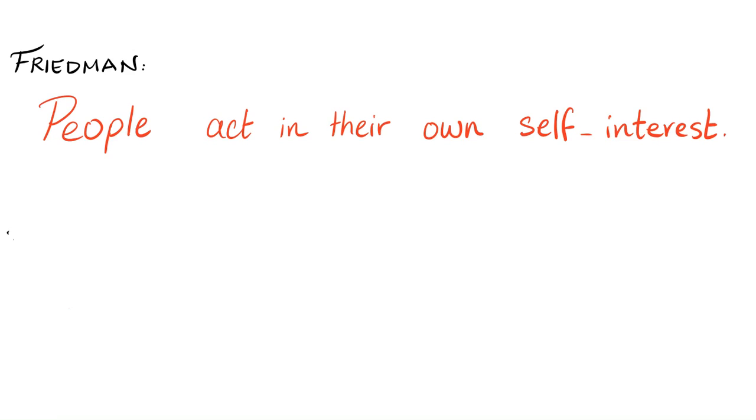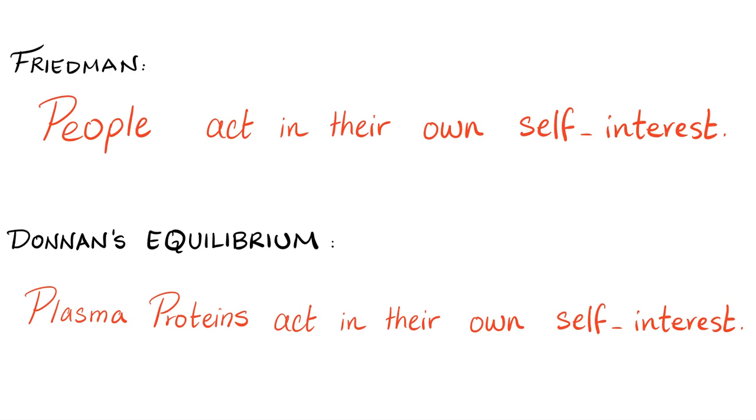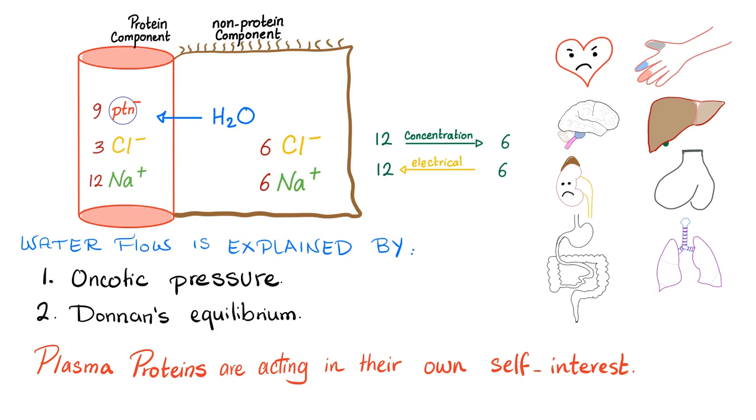Shut up Medicosis, just tell me what are you trying to say. I'm trying to say that people act in their own self-interest. Okay, what the flip does that have to do with the Donnan's equilibrium? That plasma proteins are acting in their own self-interest. How? We have established that perfusion is paramount for the survival of your organs. And therefore we need the water to flow from the non-protein compartment into the protein compartment and maintain an effective arterial blood volume to perfuse these doozy organs. Cool. Do you know what determines the flow of water? Number one, the oncotic pressure. Because there are plasma proteins here but not here, therefore water flow from here to here. Number two, the Donnan's equilibrium. The proteins have literally rigged the system so that there are more ions here than here, 15 versus 12. So water will flow from here to here. The plasma proteins are acting in their own self-interest.